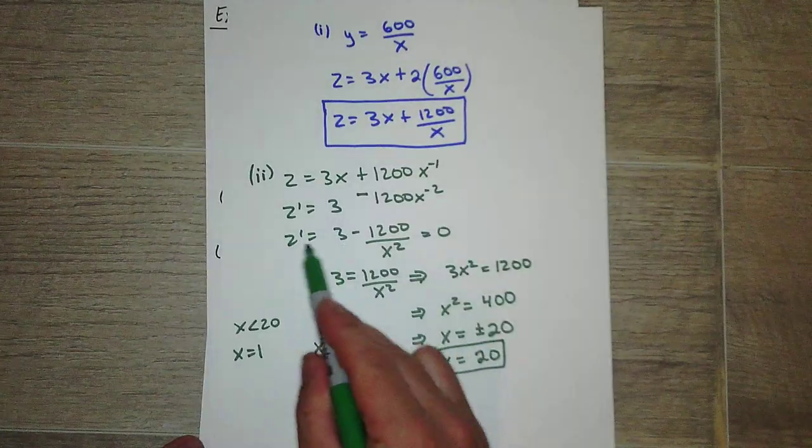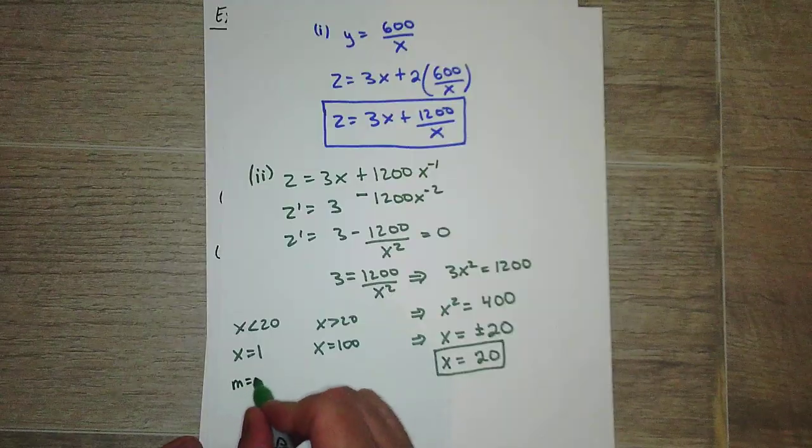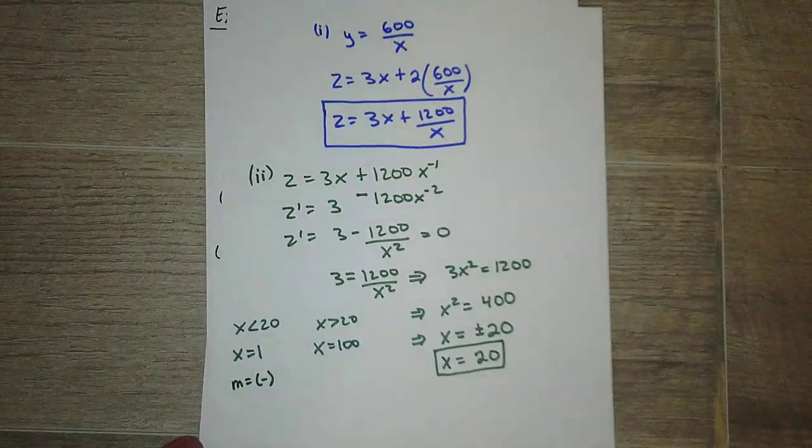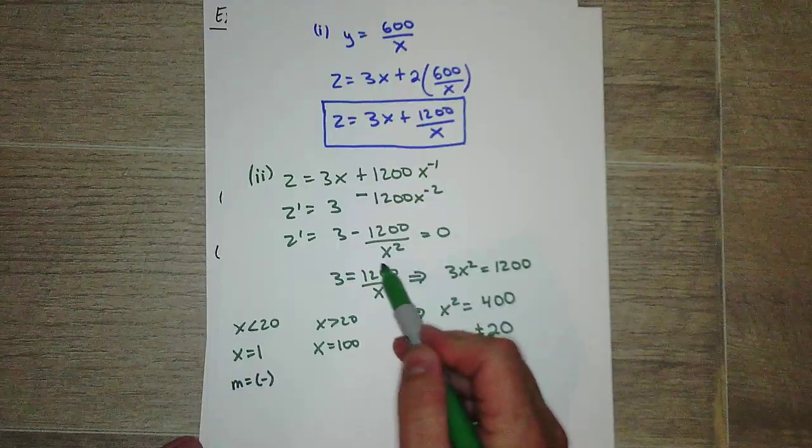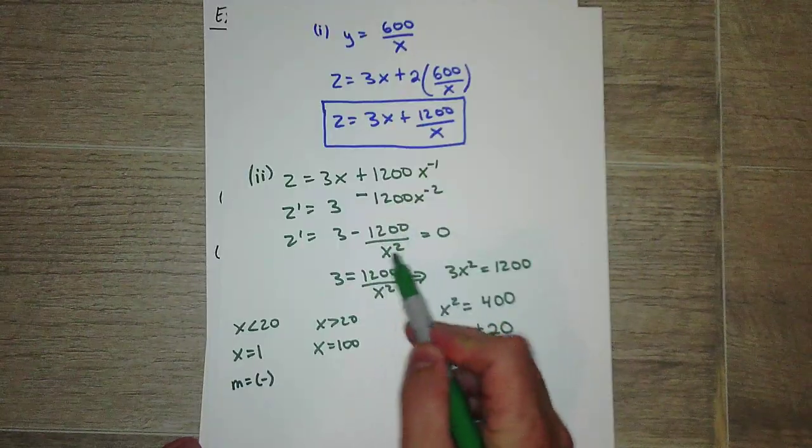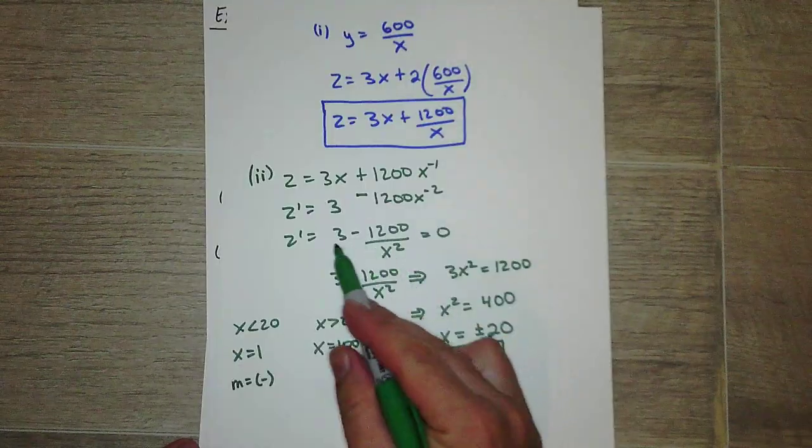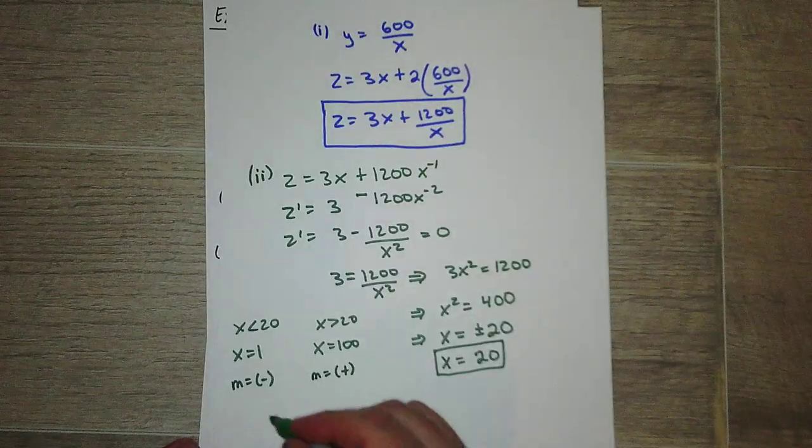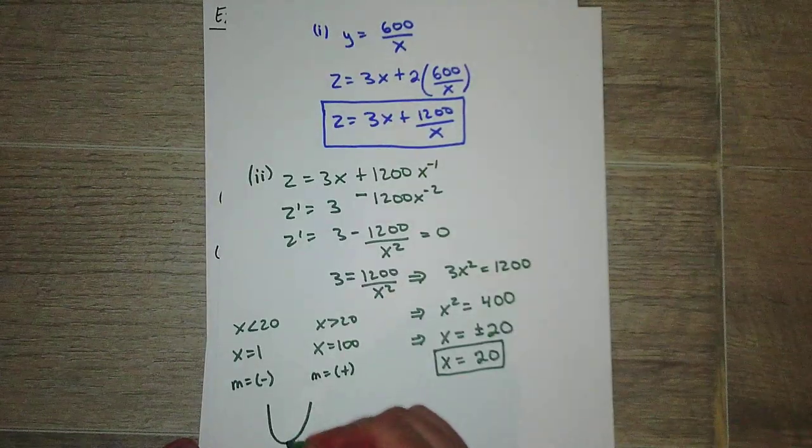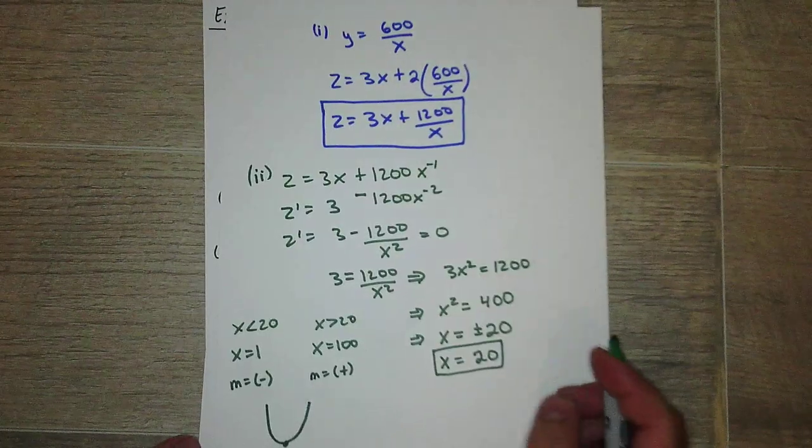Okay, so when I plug in x equals 1 into the derivative, I get 3 minus 1200, so that's definitely a negative number, so I have a negative slope. And then 3 minus 1200 divided by 100 squared, so this becomes 1200 over 10,000, which is a really small number, so we have a positive slope. So we have a negative slope and then a positive slope, so it's a minimum.